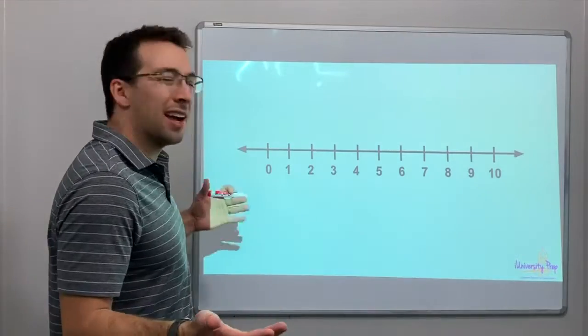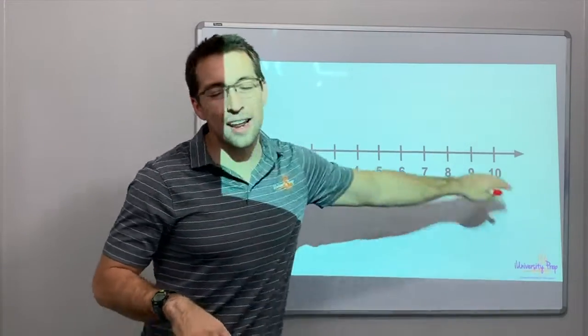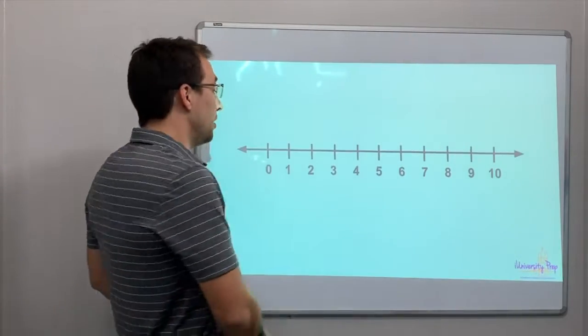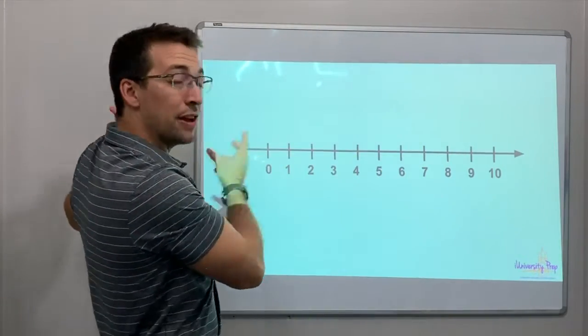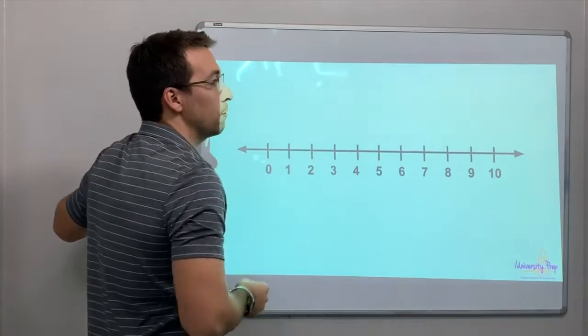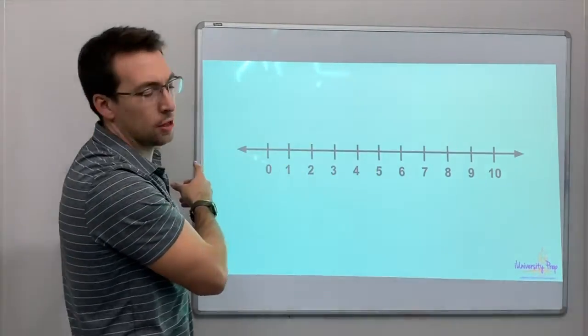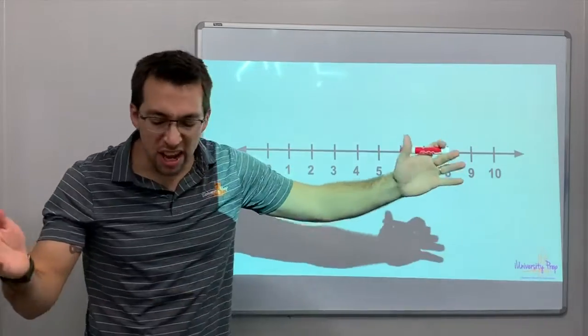Quick review: a number line, just like yesterday, can be any line that's going toward infinity in both directions. You get bigger as you move to the right, you get smaller as you move to the left. So, one through ten, there it is.